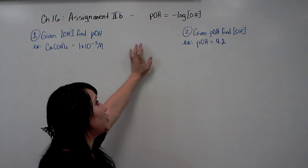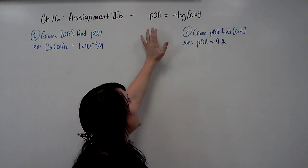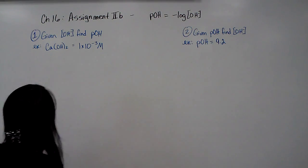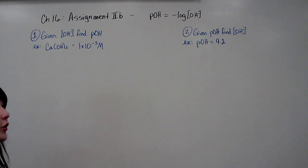All right, chapter 16, assignment 2b, using the equation POH equals the negative log of hydroxide. So I have two examples for you, and there are two ways to use this equation.